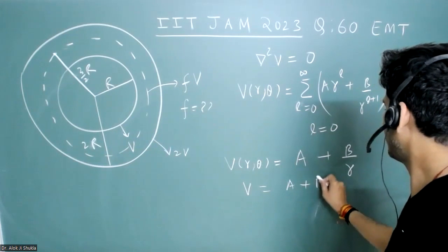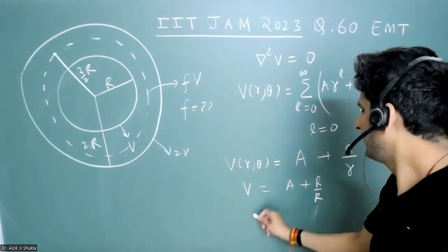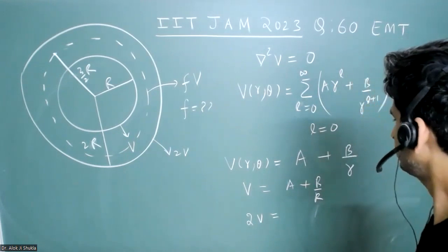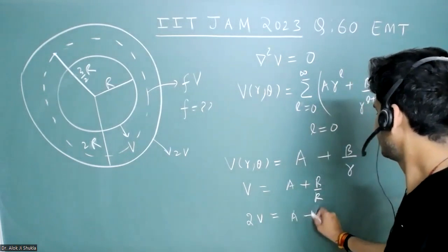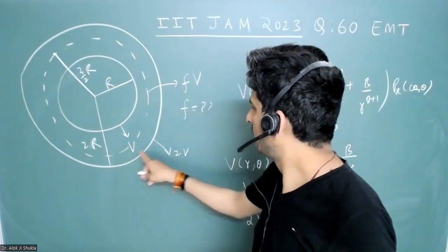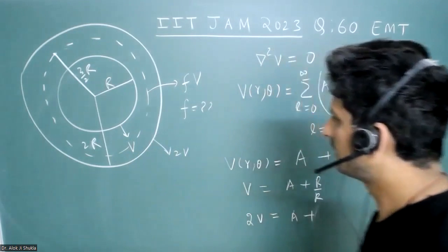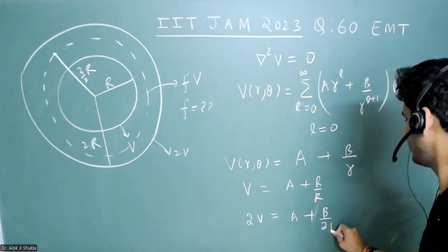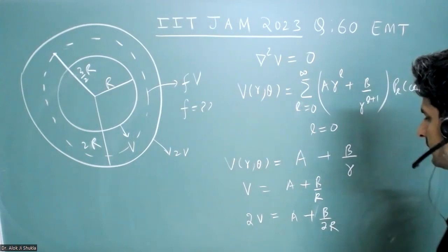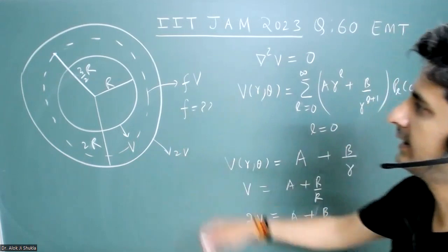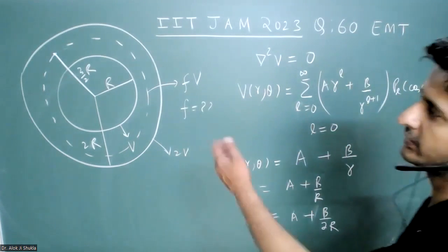And when it is 2v, then we have a plus... so this potential is 2v when the radius is 2r. So just write b by 2r. From here we will get the values of a and b, and then easily we can write what will be the potential at 3/2r.